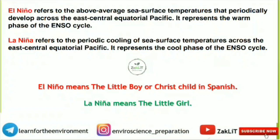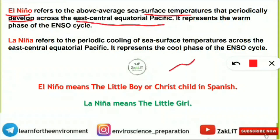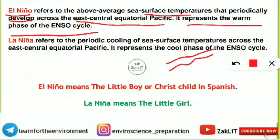The first concept we are going to know today is the frequently asked concept from the El Niño and La Niña phenomena. From the definition itself: what is El Niño? El Niño refers to the above-average sea surface temperature that periodically develops across the East Central Equatorial Pacific. It represents the warm phase of the ENSO cycle — El Niño Southern Oscillation.